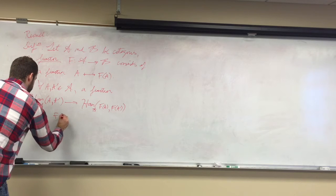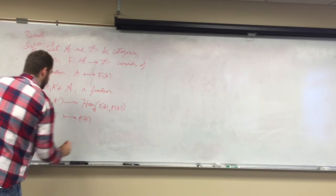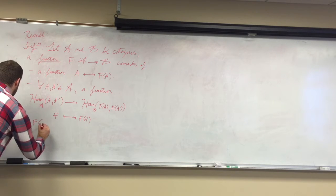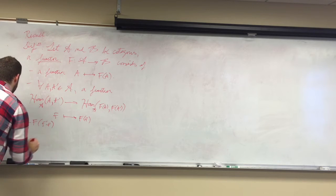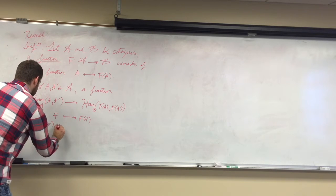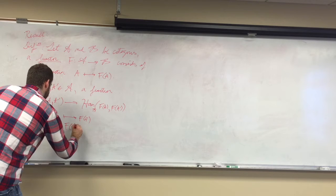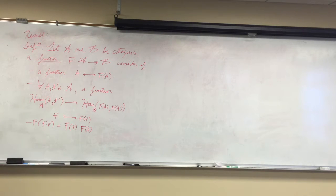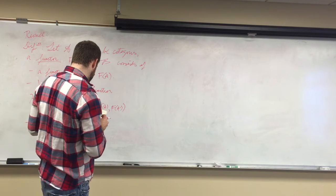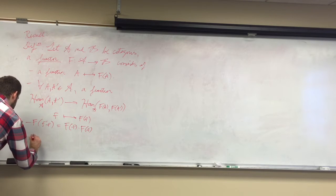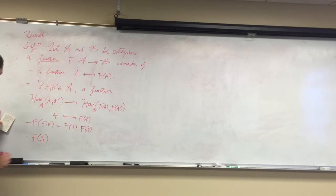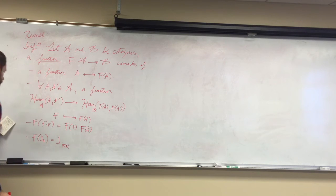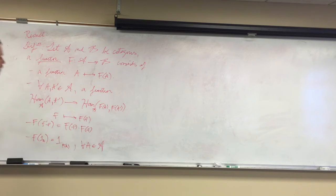A functor is also going to take a map and place it at F of wherever that map goes to. Composition works nicely as well: F of F-prime composed with F is just F of F-prime composed — composition works nicely with functors. And one last thing, it's going to take the identity on A to the identity on F of A.